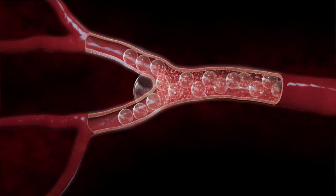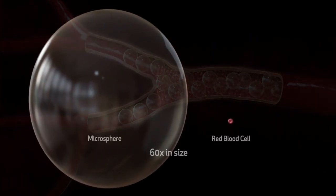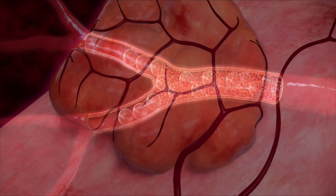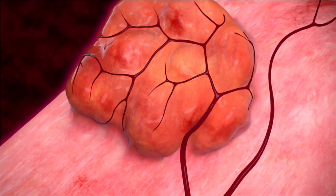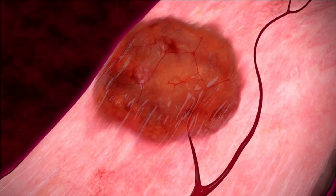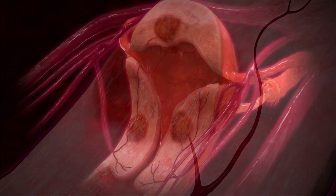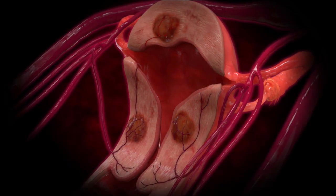The particles that we use are significantly larger than a red blood cell. When they're injected into the arteries that feed the fibroids, it prevents blood from flowing into those fibroids. The uterine fibroid embolization procedure prevents blood flow into all the fibroids at one time. Thus, all the fibroids within the uterus will shrink and the symptoms will improve.